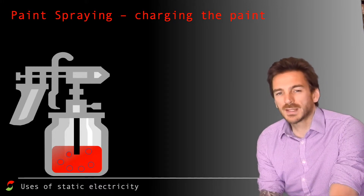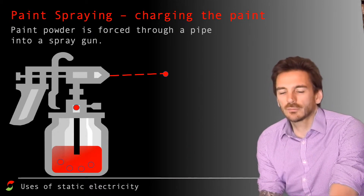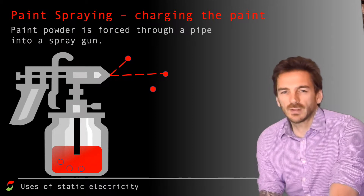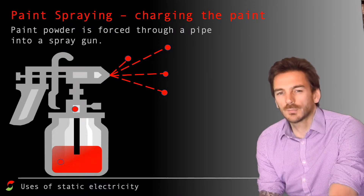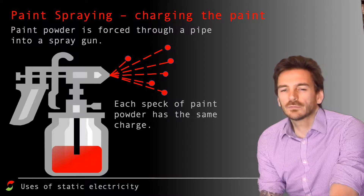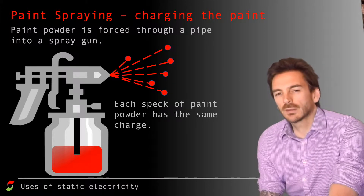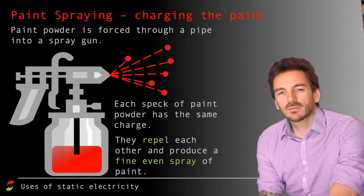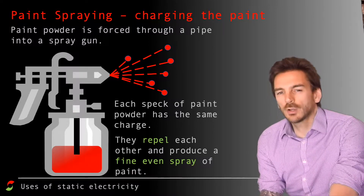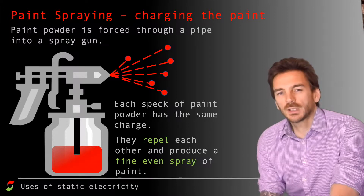If you give paint - in this case powder - a static charge, because of friction or because it's attached to the terminal of an electricity supply, all those different particles of paint when they come out will all have the same charge. Like charges repel, so the outcome is that you get a nice, fine, even spray. You give paint droplets or powder a static charge to produce a fine, even spray.